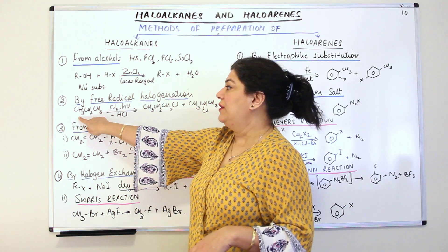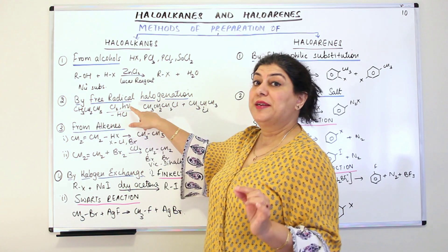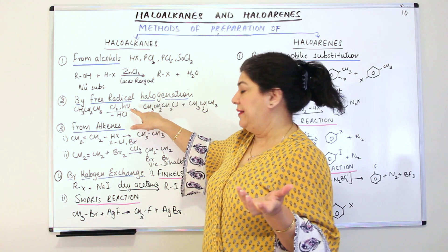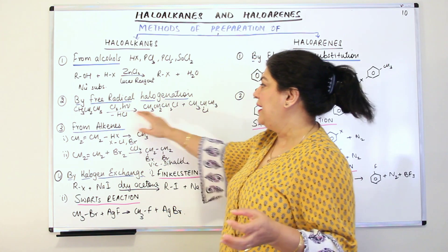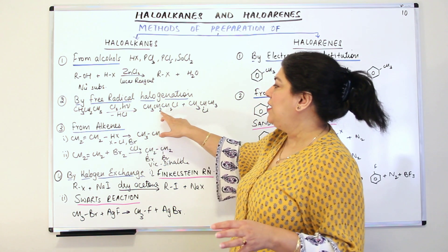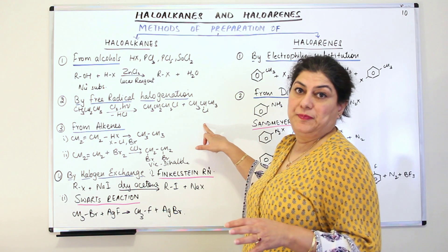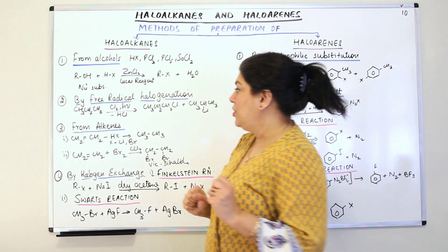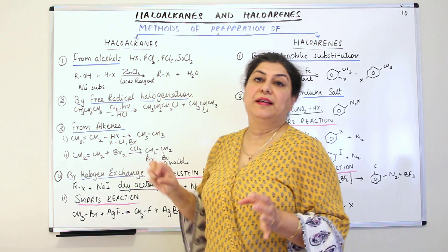For example, you have CH3CH2CH3 — that is propane — and it reacts with chlorine in the presence of hν, which is ultraviolet light. With the removal of HCl, since you take chlorine, you get CH3CH2CH2Cl plus CH3CHClCH3. So you get a mixture of two different kinds of isomers of the chloro derivative. This was by free radical halogenation.